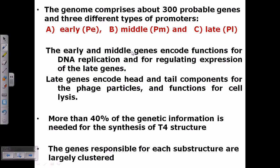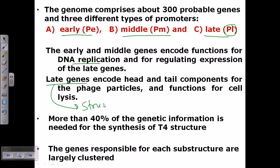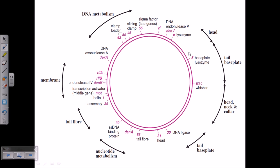The genome comprises approximately 300 probable genes organized under three types of promoters: early (Pe), middle (Pm), and late (Pl). Early and middle genes encode functions for DNA replication and regulation of late gene expression. Late genes encode the head and tail components for phage particles. More than 40 percent of the genetic information is needed for the synthesis of T4 structure.